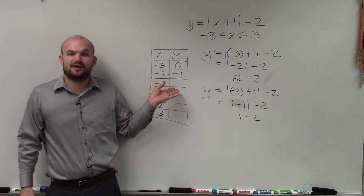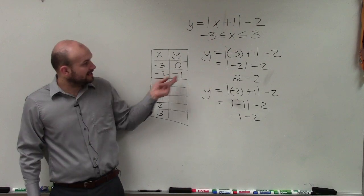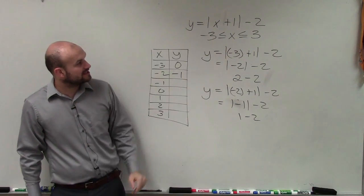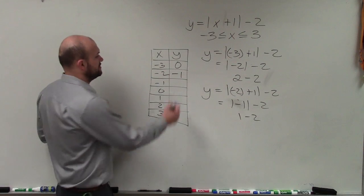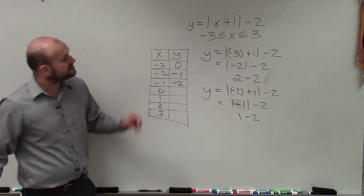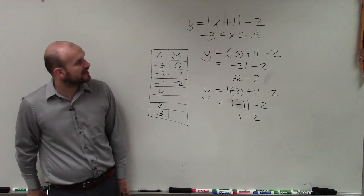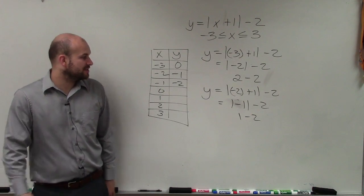OK, so now I'm just going to kind of do these in my head to finish the rest of the problem. Negative 1, so I plug in negative 1 for x, negative 1 plus 1 is 0. Absolute value of 0 is 0, minus 2 is negative 2. If I plug in 0, 0 plus 1 is 1, absolute value of 1 is 1, 1 minus 2 is negative 1.